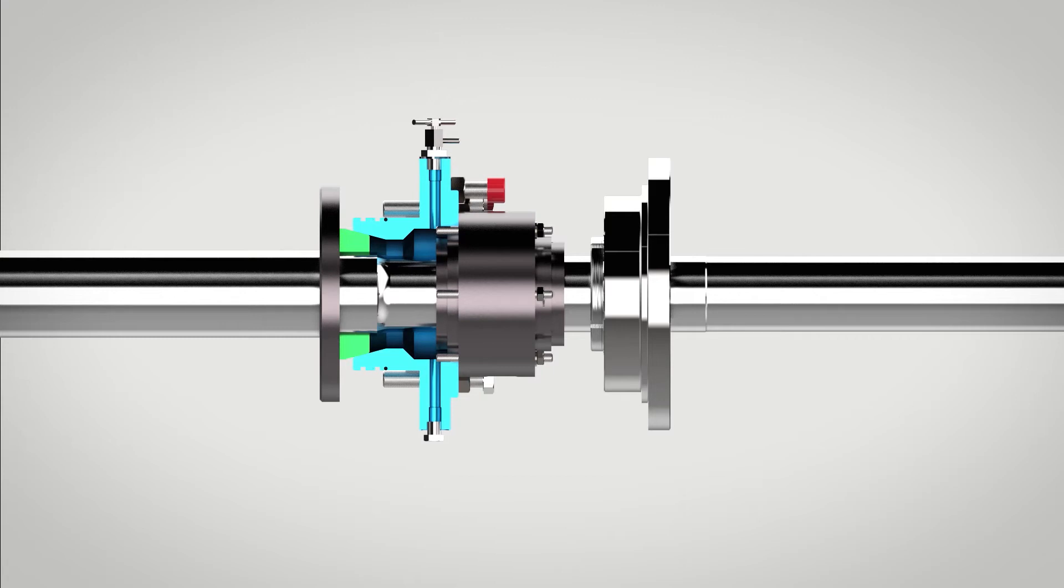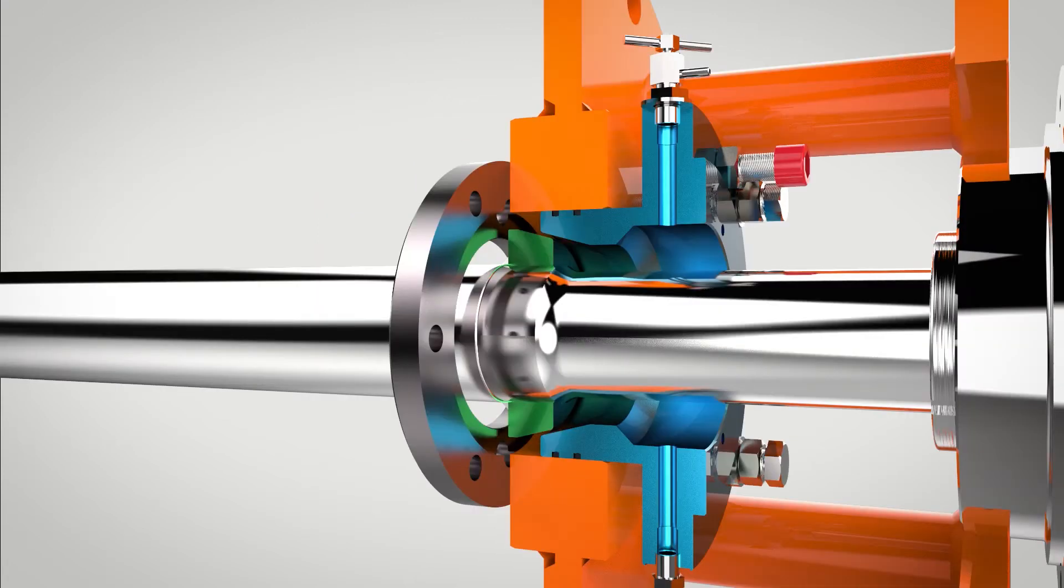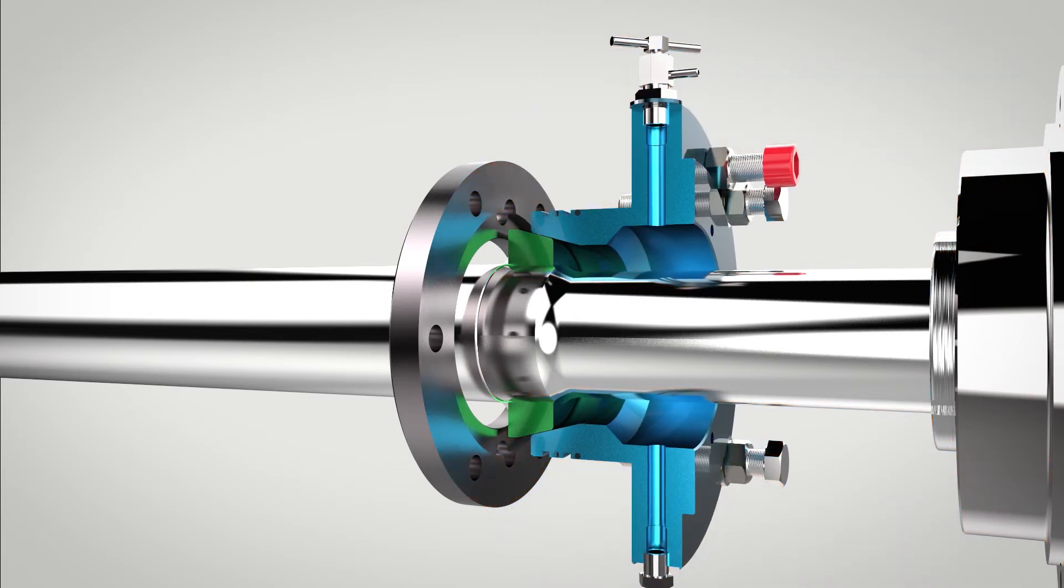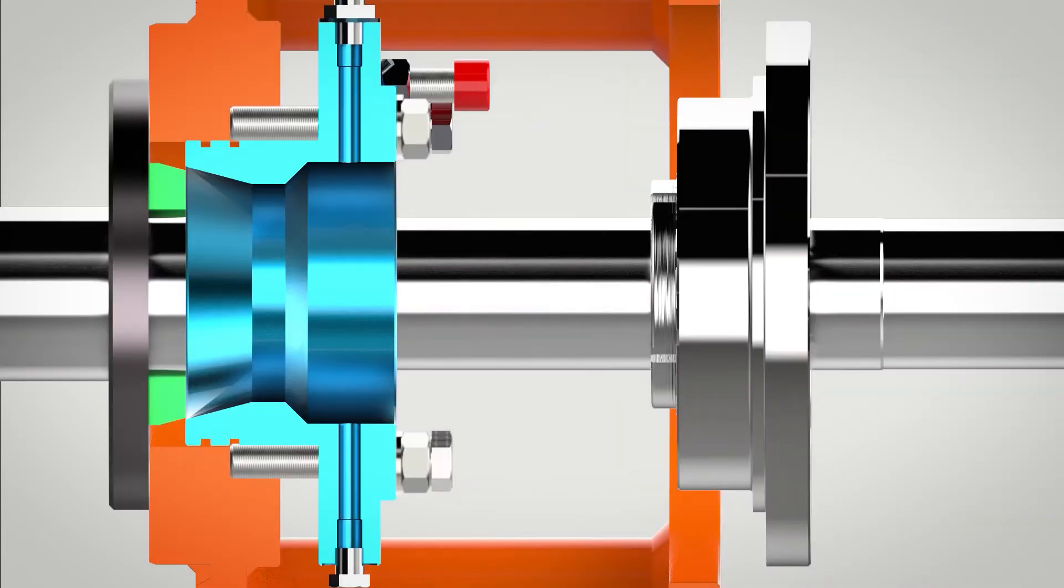The mixer shaft, including bearings and seal, remains in position. Once the shut-off device is engaged, the seal can easily be exchanged.